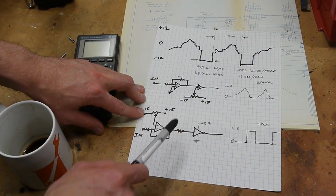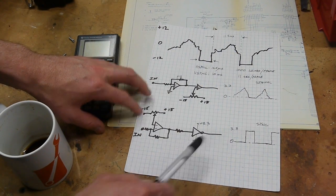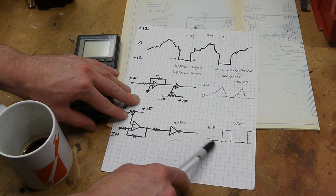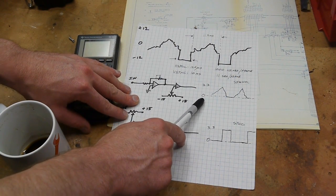Even though this thing is snapping around from negative 15 to 15 almost, when we get through the inverter we're down to just 0 to 3.3. Now we have our digital sync signal which we can put into a digital pin on the microcontroller.